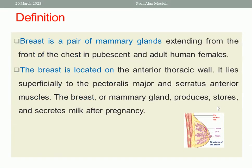Let us start with the definition — what is the breast? The breast is a pair of mammary glands extending from the front of the chest in adult human females. At early life, they start from the second to sixth rib. Later on in a woman's life, they may extend down due to sagging. The breast is located on the anterior thoracic wall.